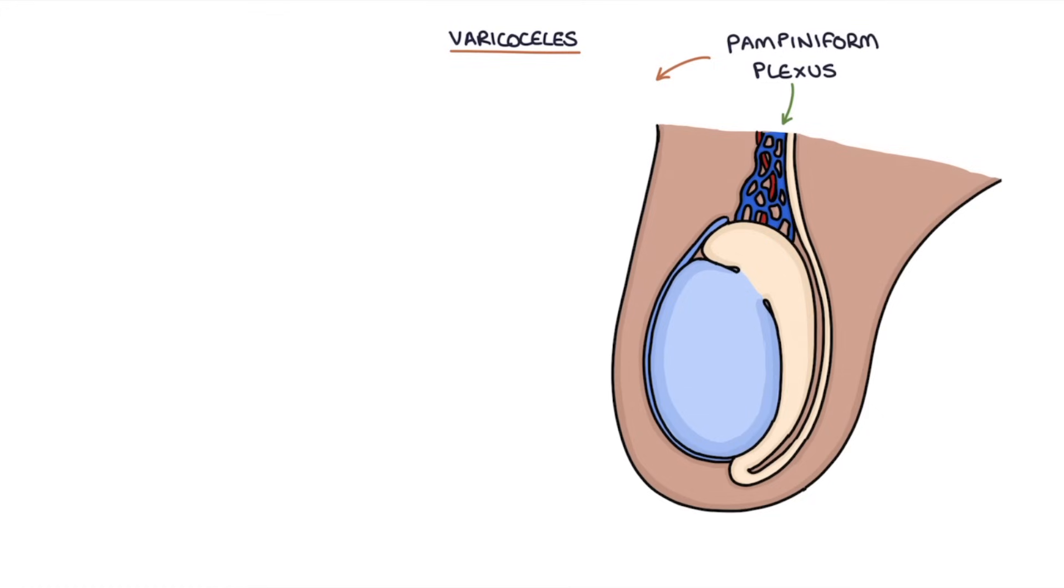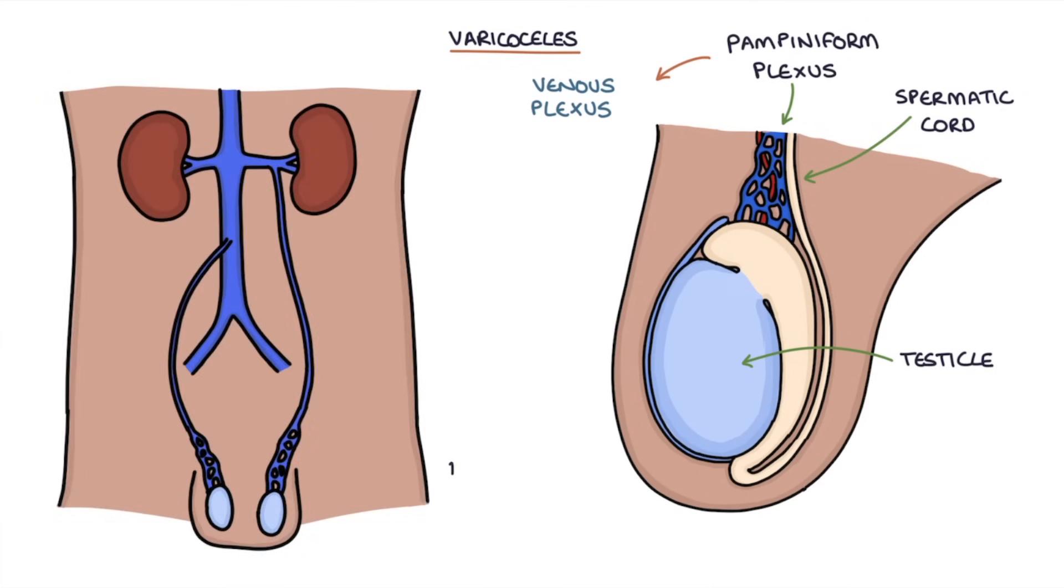The pampiniform plexus is a venous plexus that drains blood away from the testes and is found inside the spermatic cord above the testicles. The pampiniform plexus drains into the testicular vein and plays a role in regulating the temperature of the blood entering the testes by absorbing heat from the nearby testicular artery. The testicles need to be at an optimum temperature for producing sperm.